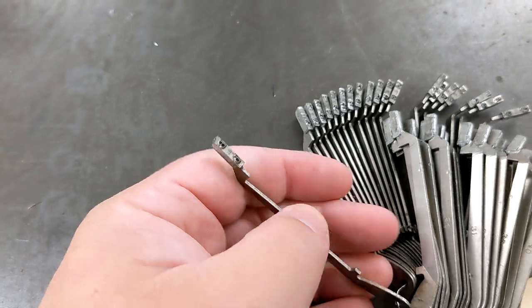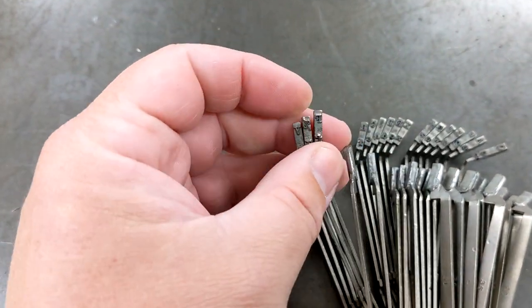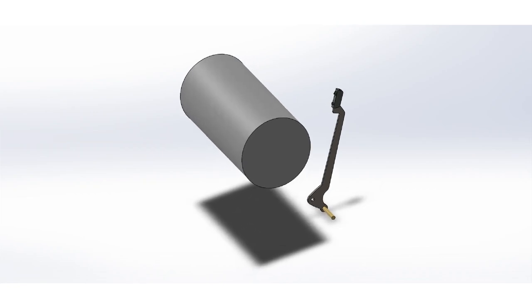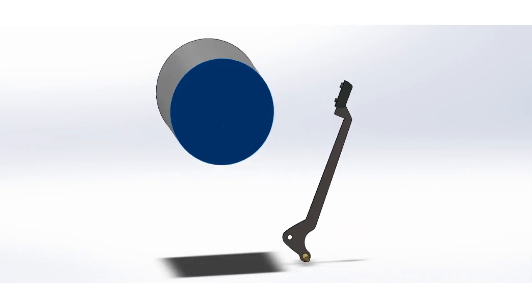In case you've never looked closely at them before, each has two characters of type on the head, one above the other. Because it's striking against a piece of paper curled around a cylindrical carriage, only one of the two characters will hit.